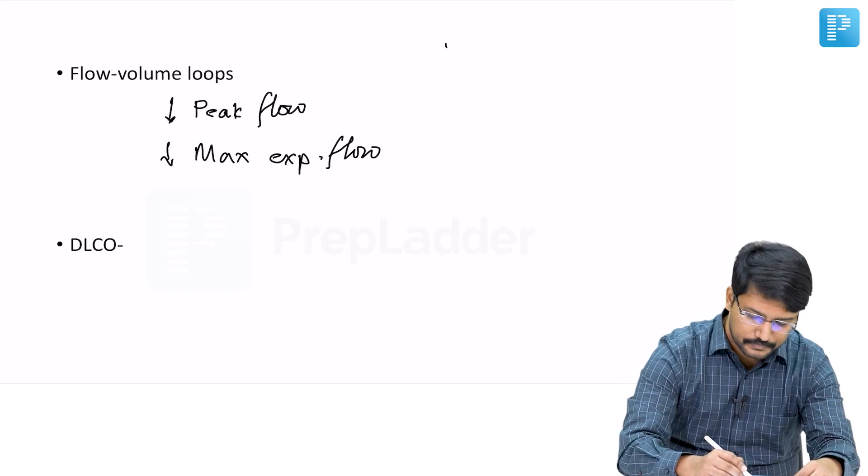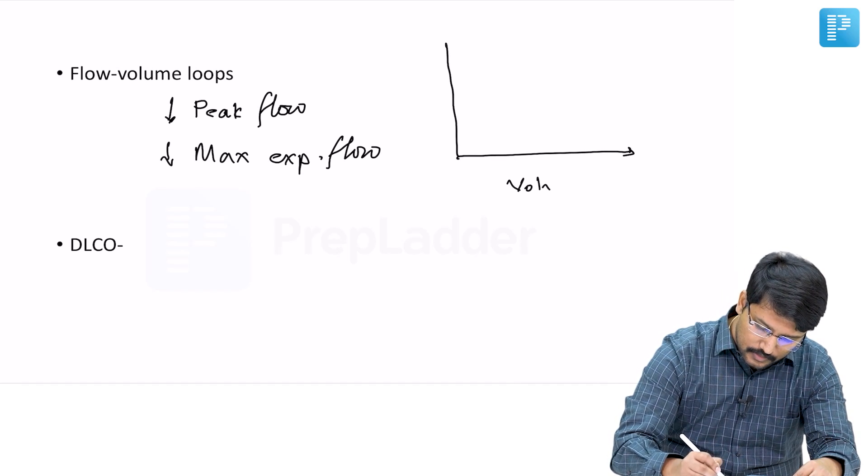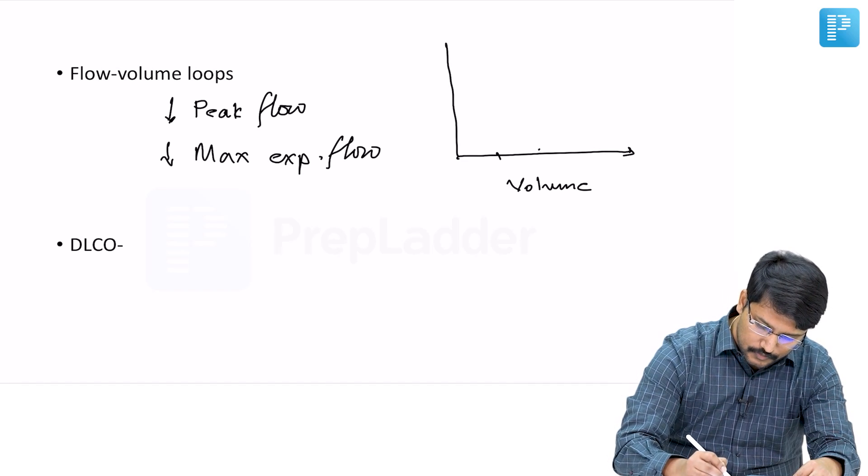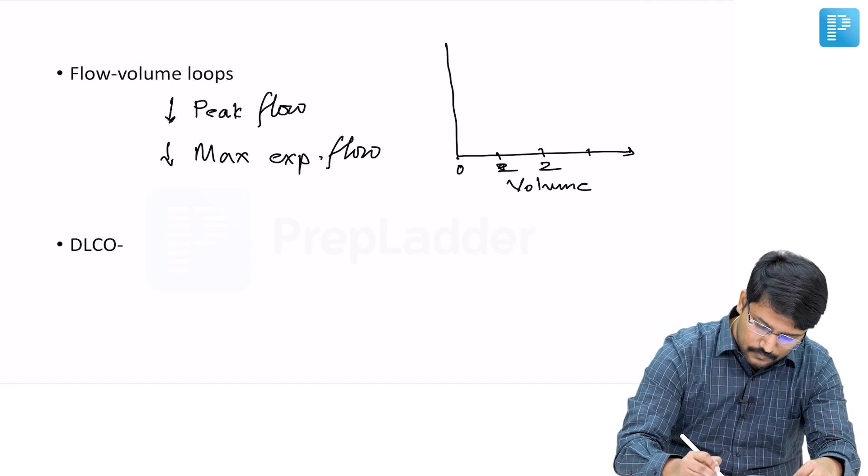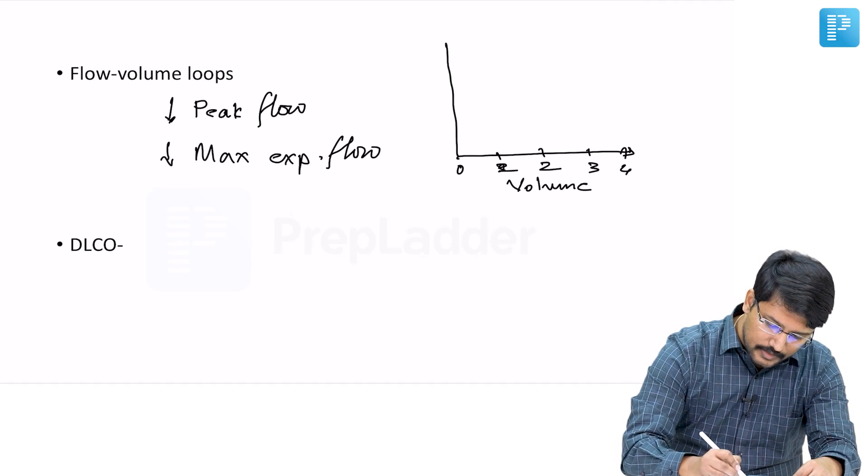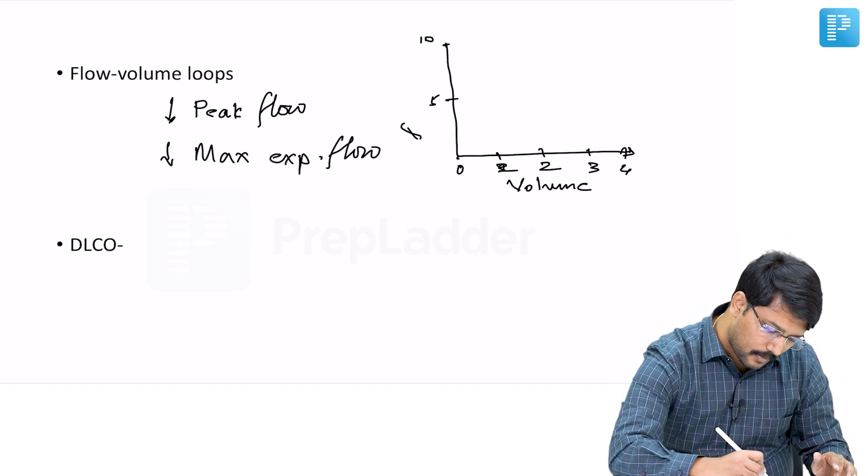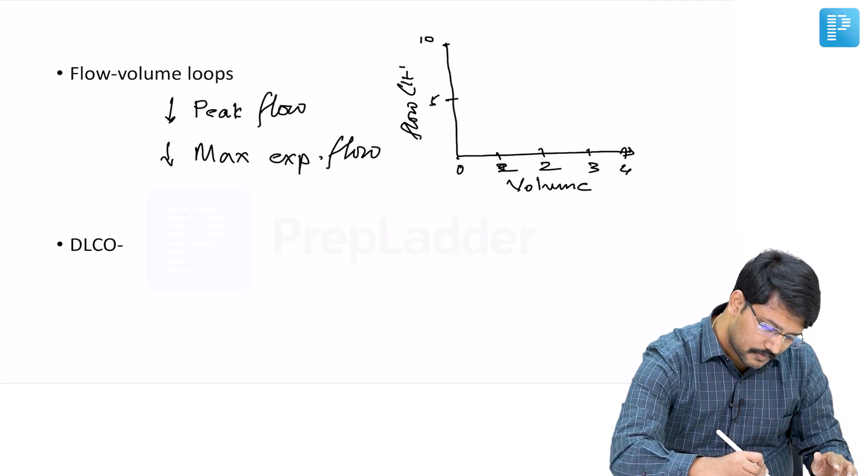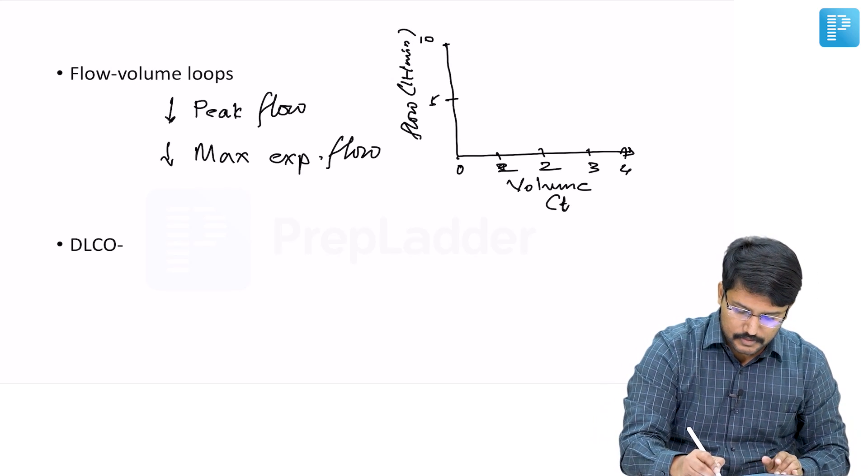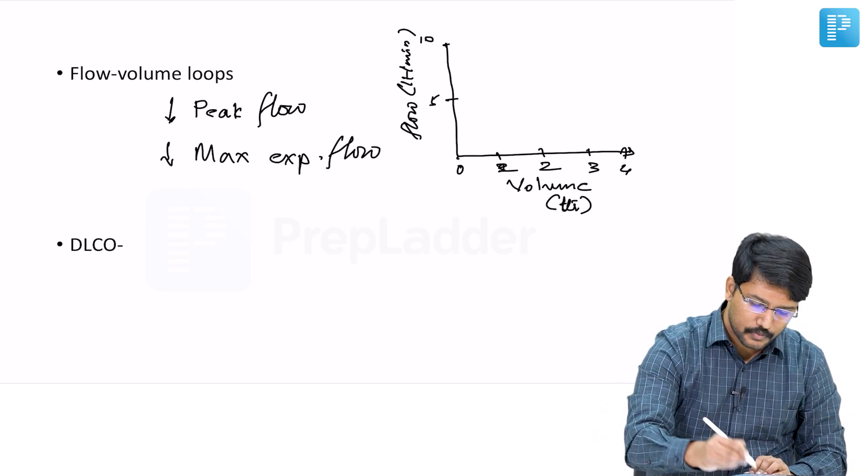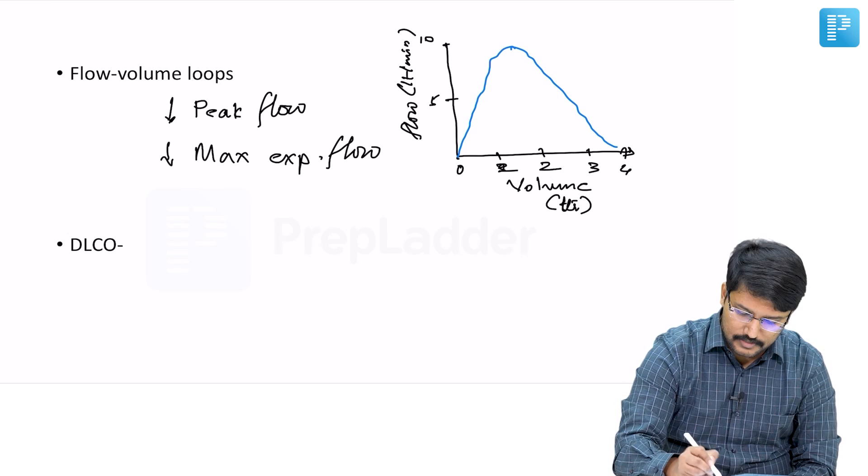In a normal person, if we plot the volume in this direction—1, 2, 3, 4 liters—and the flow in liters per minute, volume in liters. Normally what we notice is in a normal person, we get a curve something like this.